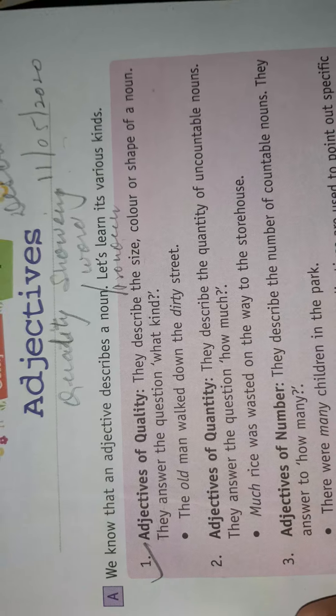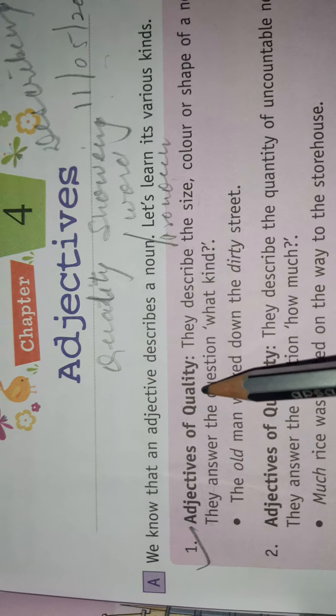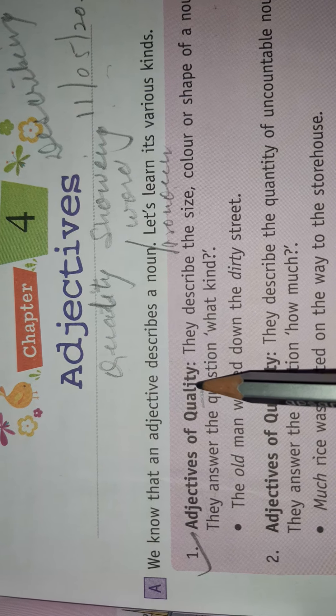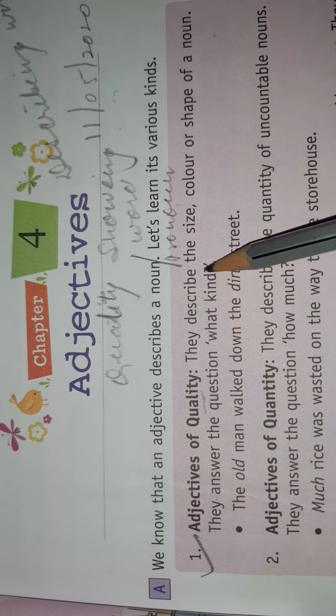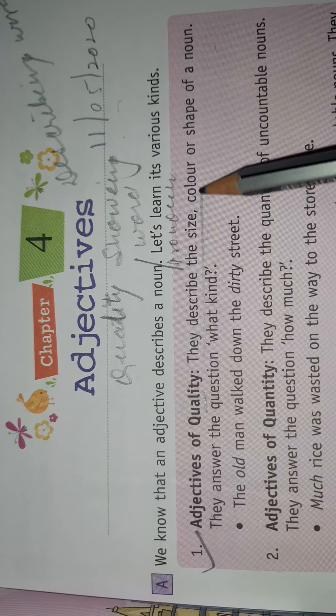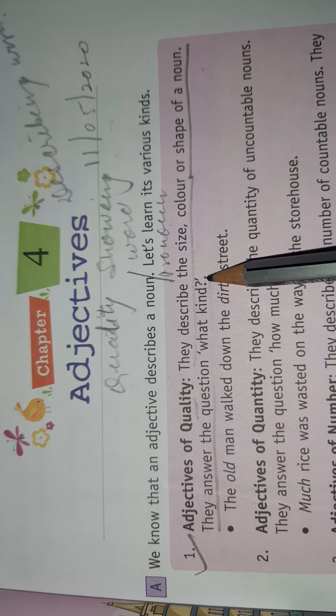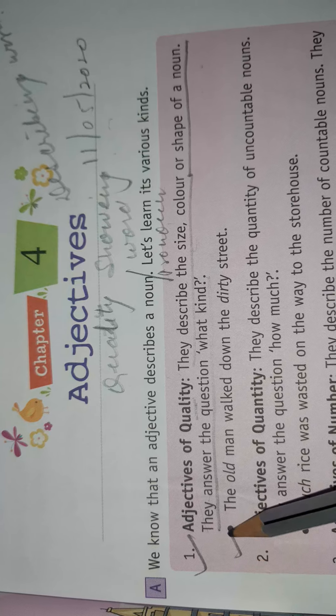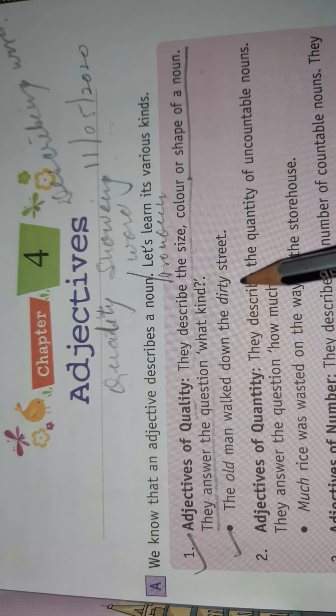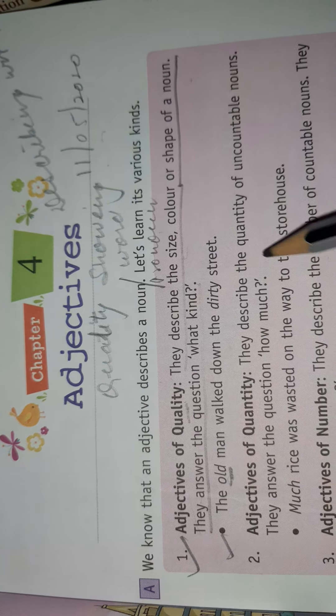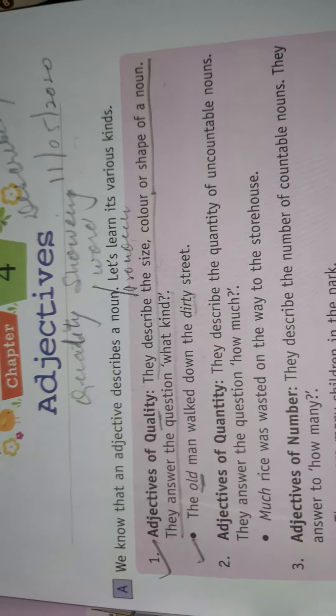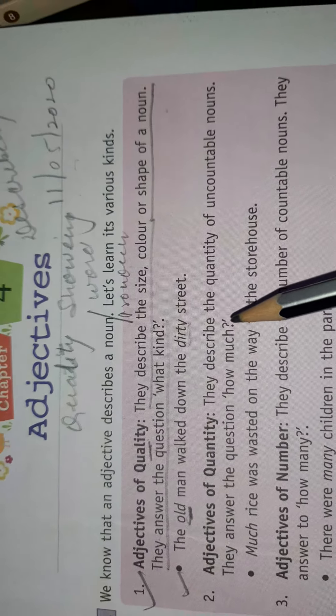Now let's learn its various kinds. Adjectives of Quality: they describe the size, color, or shape of a noun. They answer the question 'what kind.' For example: 'The old man walked down the dirty street.' In this sentence, 'old' and 'dirty' are Adjectives of Quality.